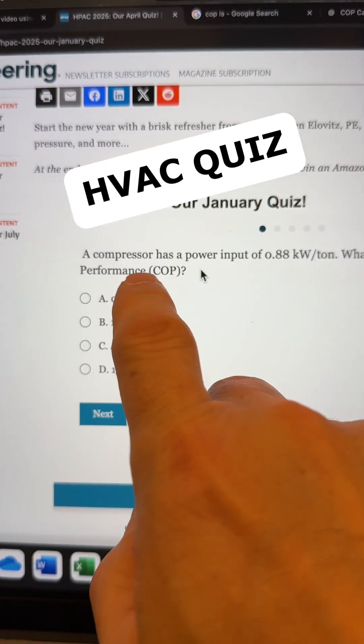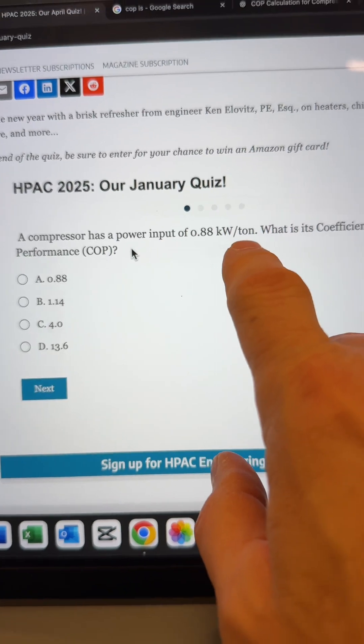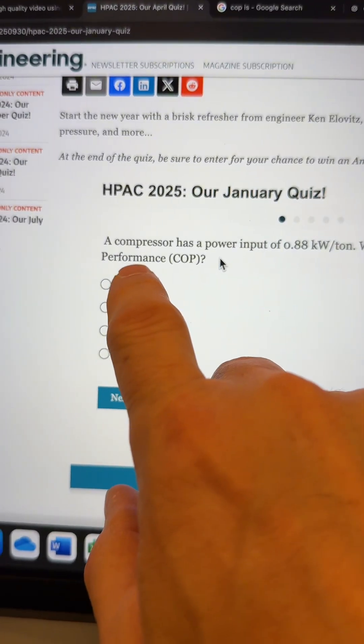Okay, so quiz question of the day. A compressor has a power input of 0.88 kilowatts per ton. What is the coefficient of performance?